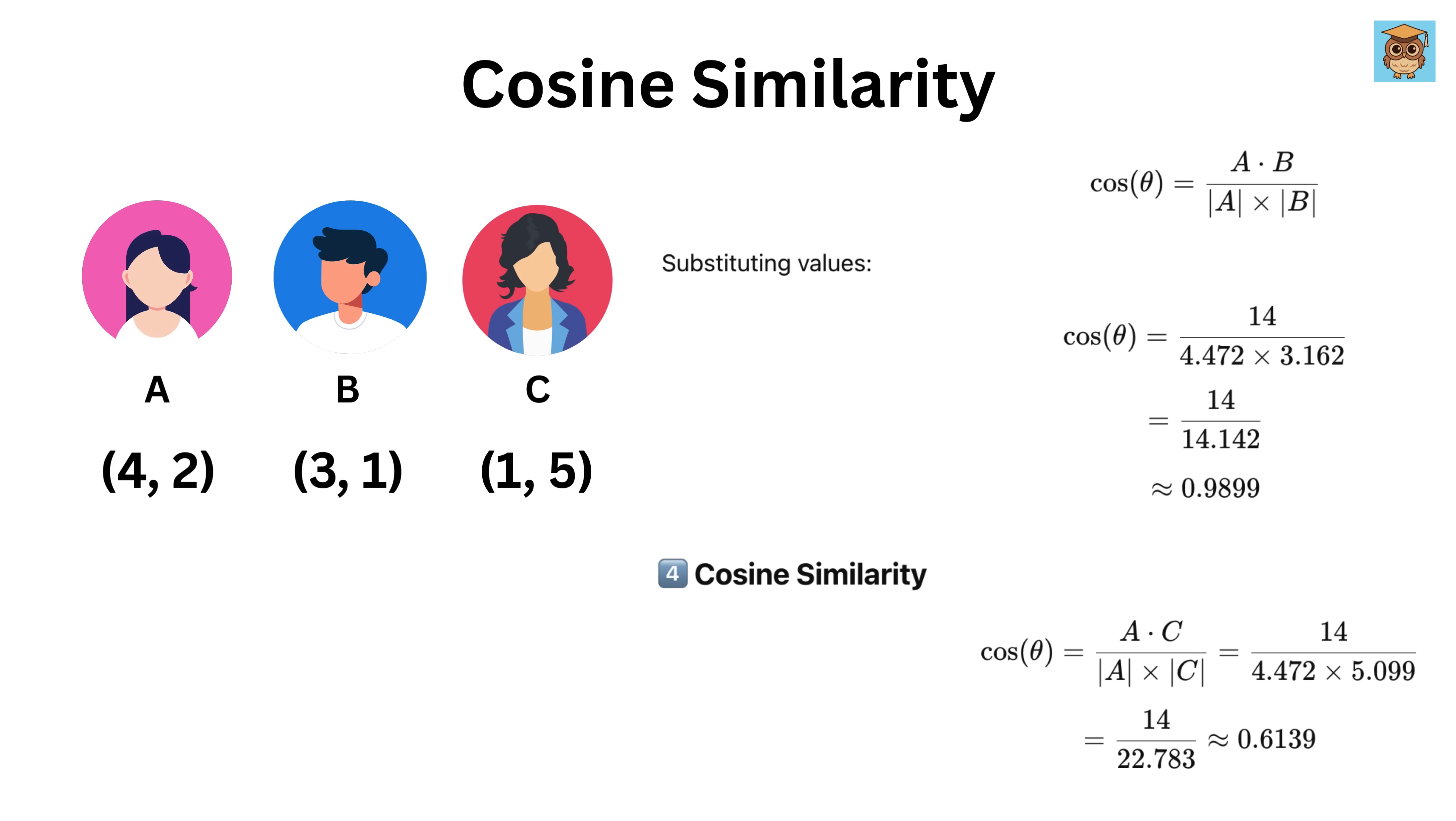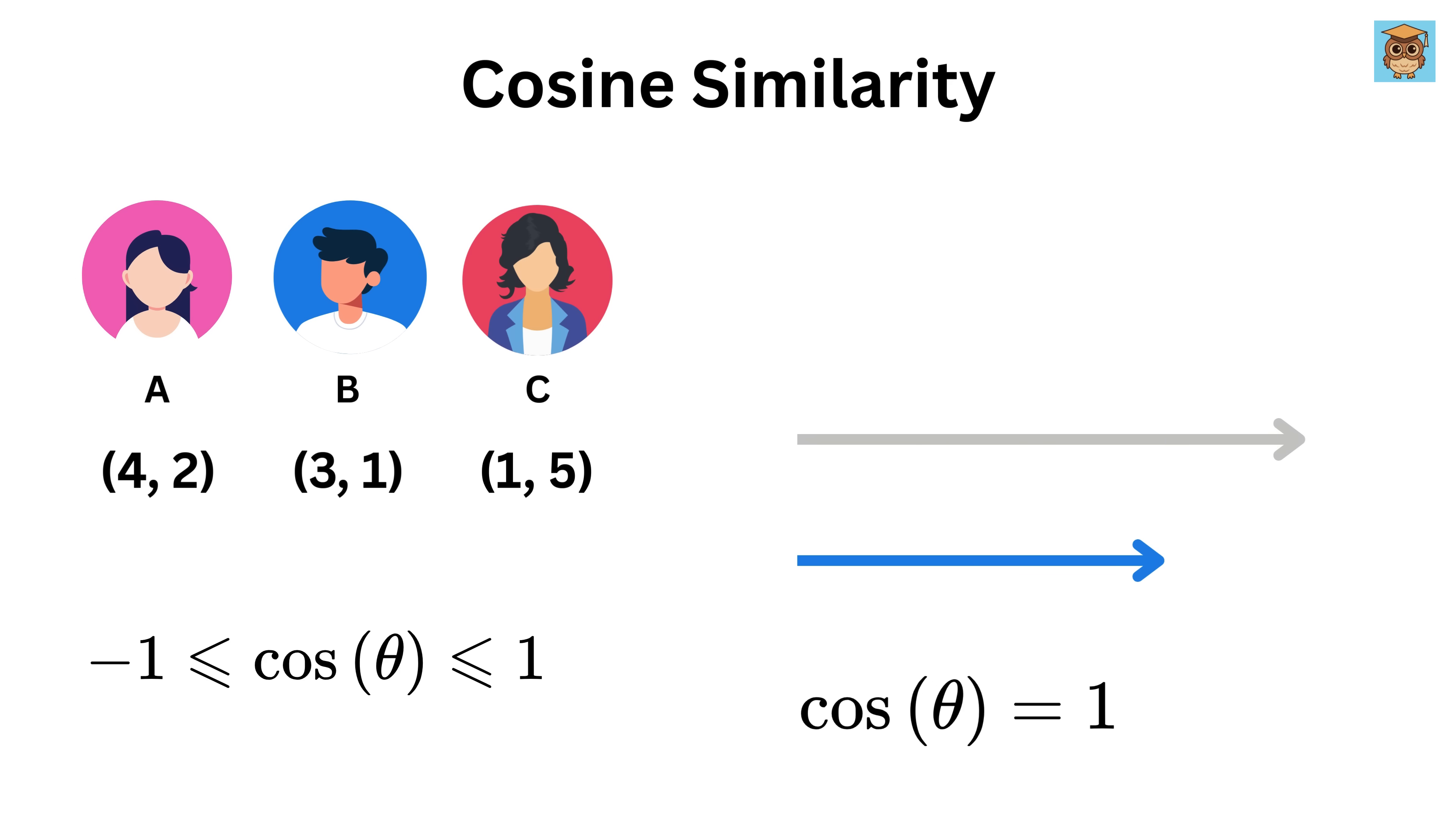We know that cosine value ranges between minus one and one. Value of one means angle between them is zero, and thus they point in the exact same direction, or they are very, very similar. Zero means the vectors are at a 90 degree angle and thus are completely unrelated. Minus one means they point in opposite directions, and thus they have totally opposite preferences.